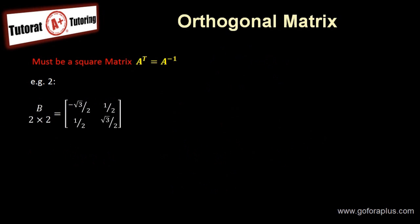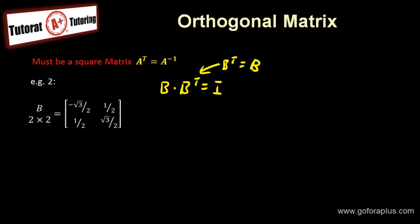Now let's do example 2. Matrix B is a 2 by 2 matrix. Again, I want to show that B times B transpose equals I, and that means B transpose is equal to B inverse.